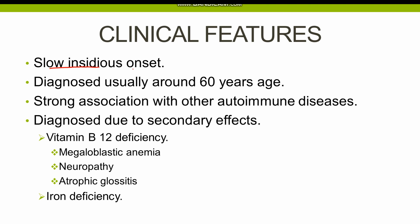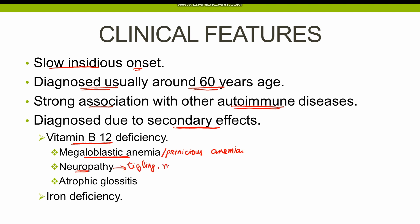Autoimmune gastritis has a slow and insidious onset, and that is why it is usually diagnosed at a late age, around 60 years. The disease has a strong association with other autoimmune diseases, most commonly Hashimoto's thyroiditis and type 1 diabetes mellitus. The secondary effects of autoimmune gastritis include vitamin B12 deficiency due to lack of intrinsic factor, resulting in megaloblastic or pernicious anemia. It can also cause neuropathy, characterized in early stages by tingling and numbness in the peripheries, and at late stages involving the central nervous system. There is often atrophic glossitis as well.